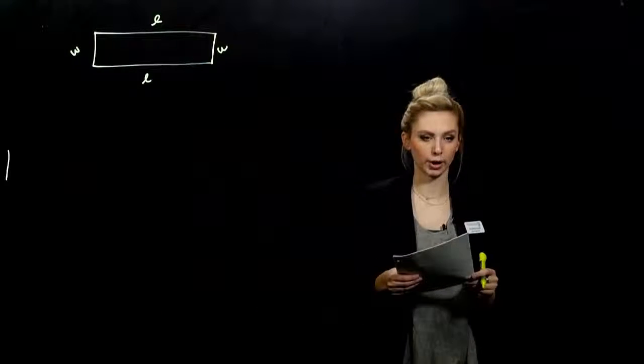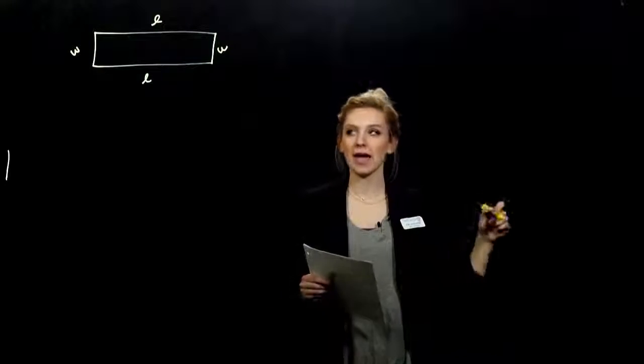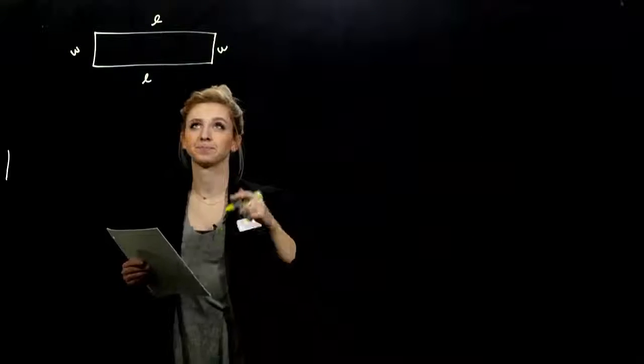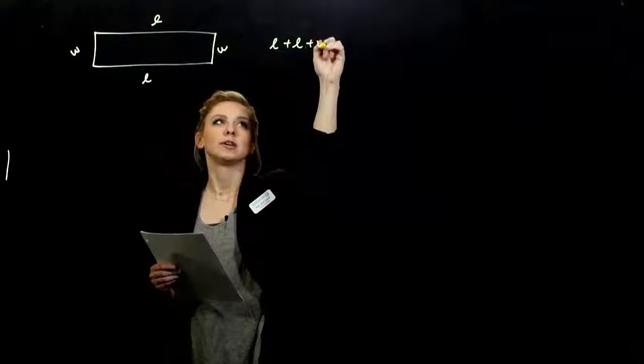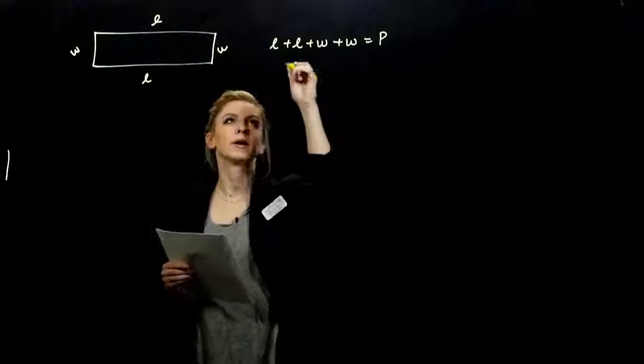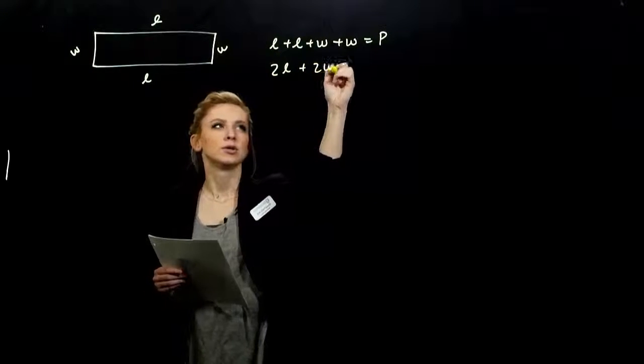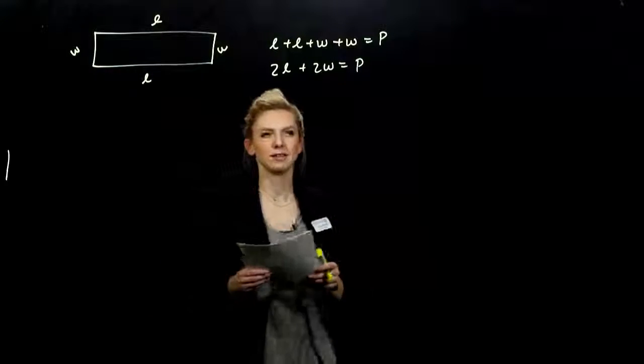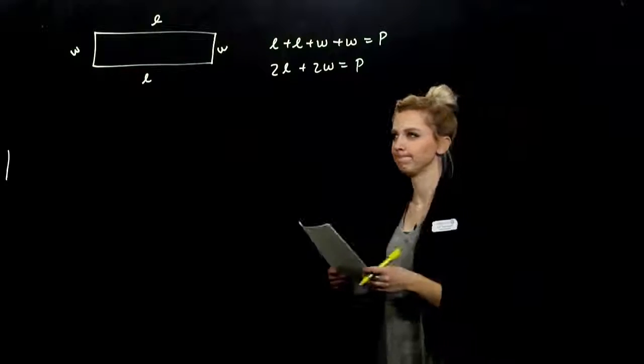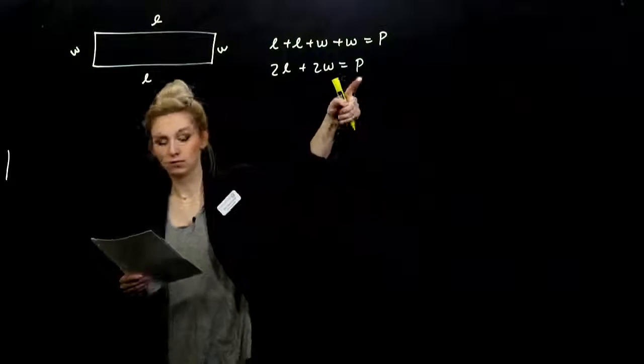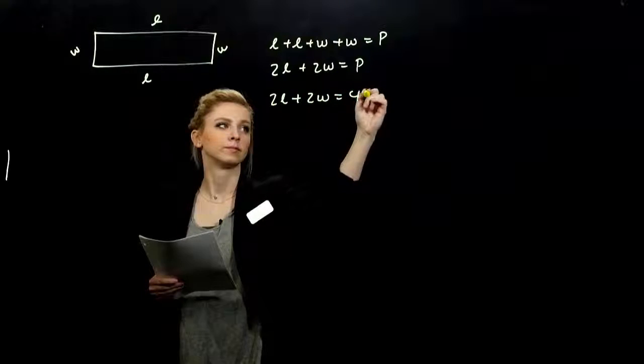So what does it mean to be the perimeter of something? It's on the outside. So adding up all the sides is my perimeter. So if I add up L plus L plus W plus W, that gives me my perimeter. But we can rewrite this a little bit better. Got two L's, two W's. Two times the length plus two times the width gives me the perimeter. And we know how much the perimeter of this thing is. 420. So I'm going to plug that in.